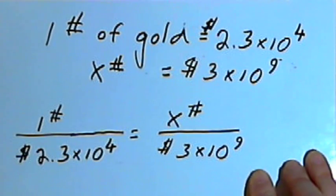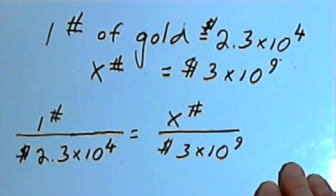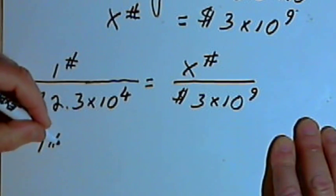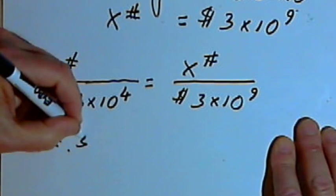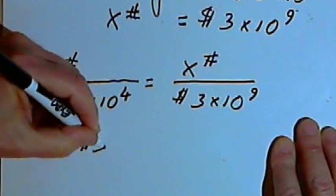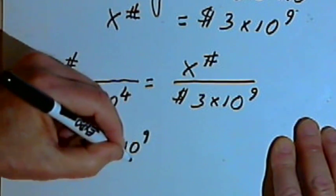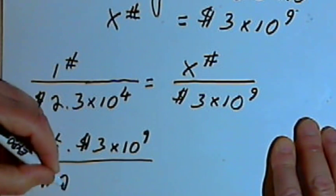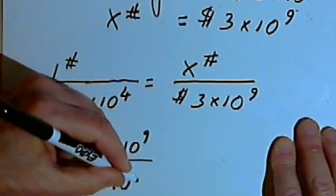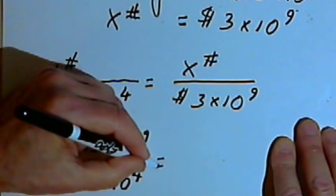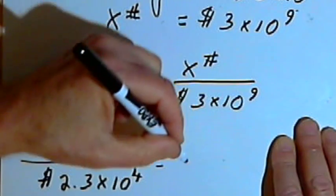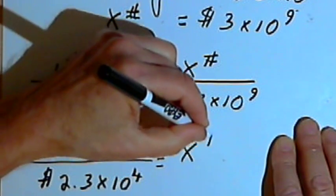So what I can do is multiply both sides by 3 times 10 to the ninth. Well, 1 pound, I'm going to have 1 pound, times 3 times 10 to the ninth, that's dollars, over 2.3 times 10 to the fourth dollars. And on the right side of the equation, well, that 3 times 10 to the ninth dollars would just have cancelled. So that's x pounds.